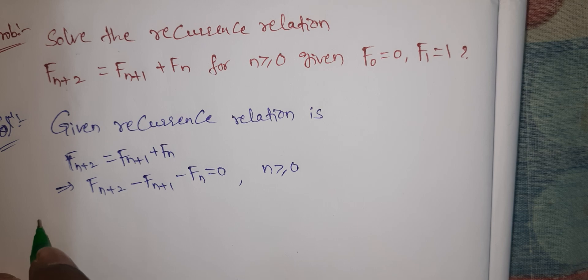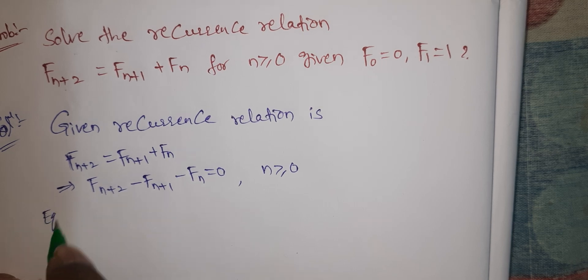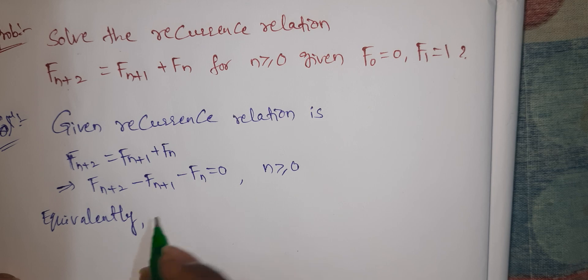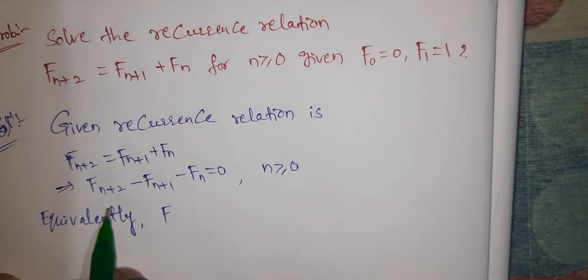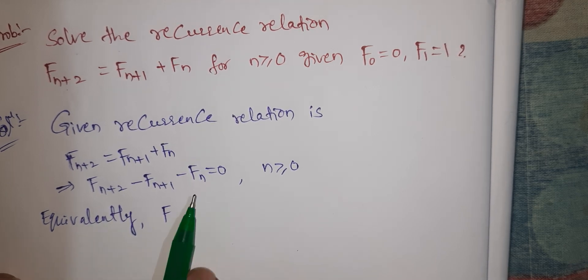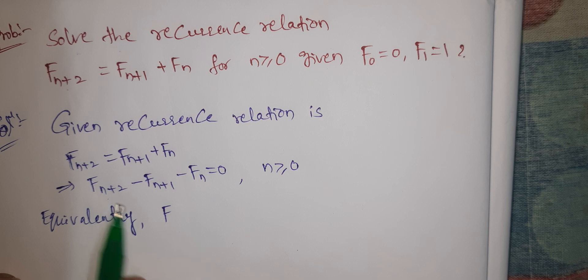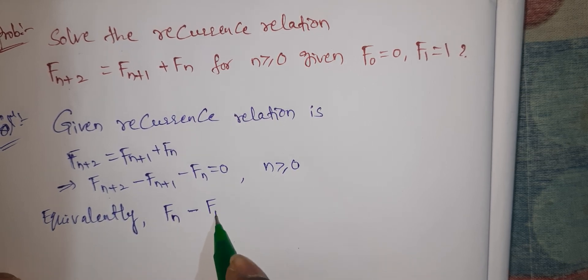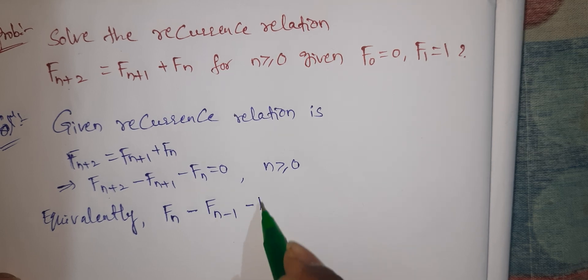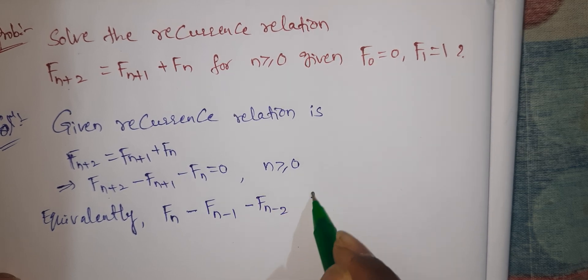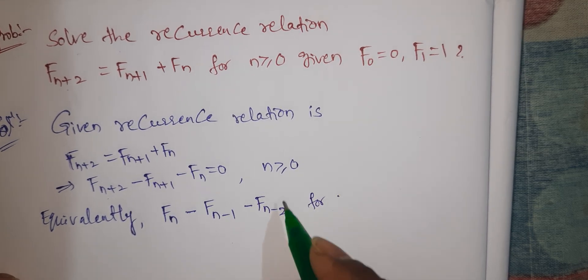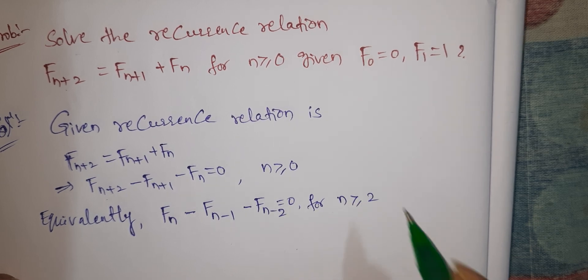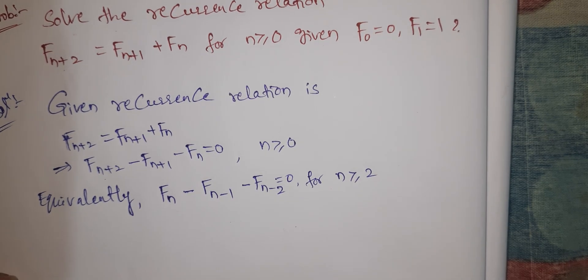Equivalently, this can be written as f(n) - f(n-1) - f(n-2) = 0 for n ≥ 2.